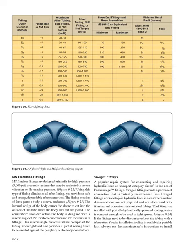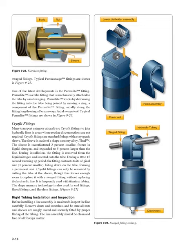Swaged fittings: a popular repair system for connecting and repairing hydraulic lines on transport category aircraft is the use of permaswage fittings. Swaged fittings create a permanent connection that is virtually maintenance-free. They are used to join hydraulic lines in areas where routine disconnections are not required and are often used with titanium and corrosion-resistant steel tubing. The fittings are installed with portable hydraulically powered tools that are compact enough to be used in tight spaces. If the fittings need to be disconnected, cut the tubing with a tube cutter. Special installation tooling is available in portable kits; always use the manufacturer's instructions to install swaged fittings.